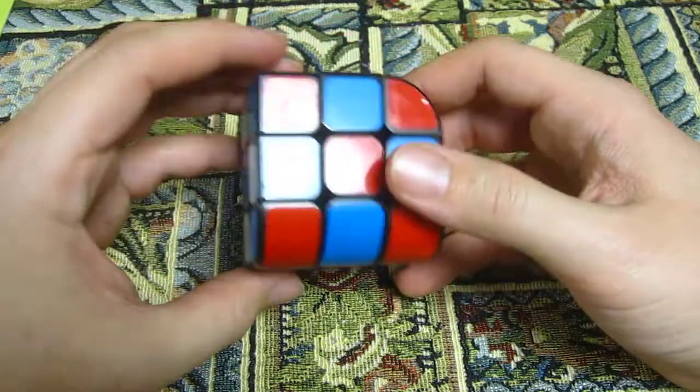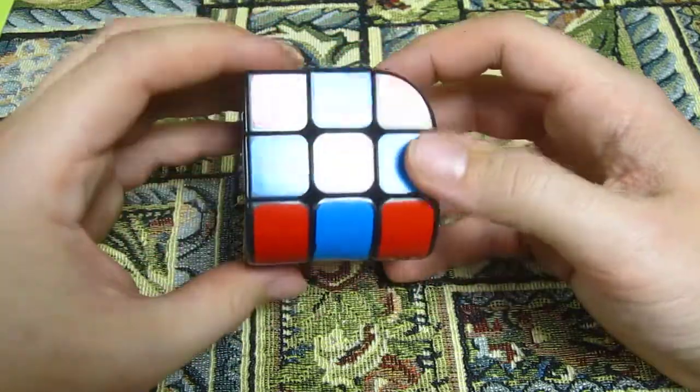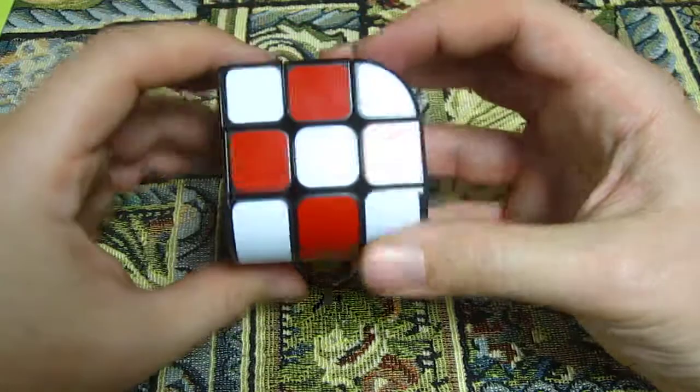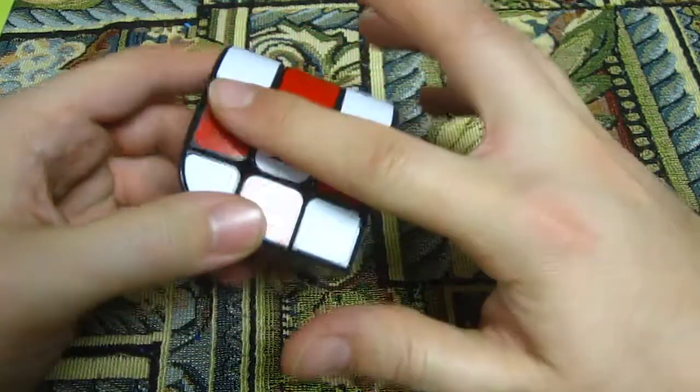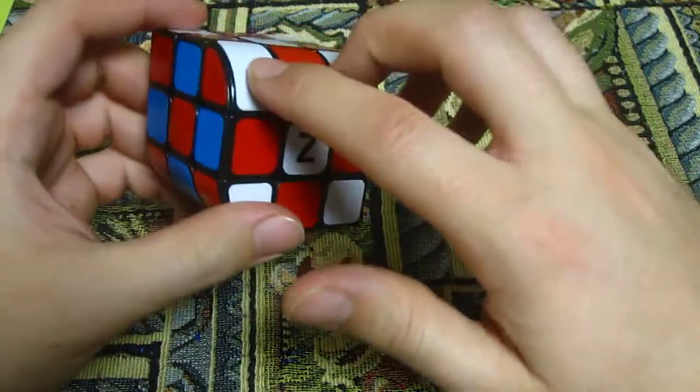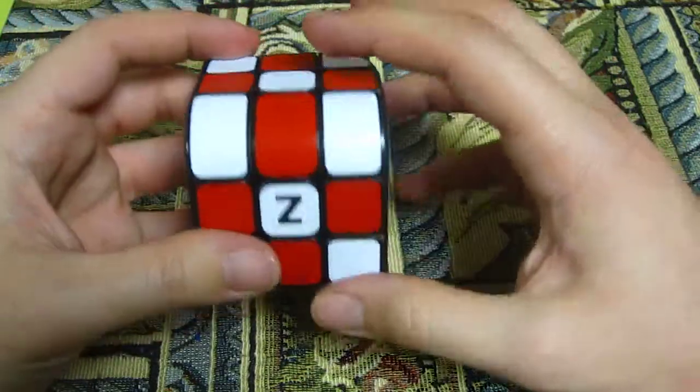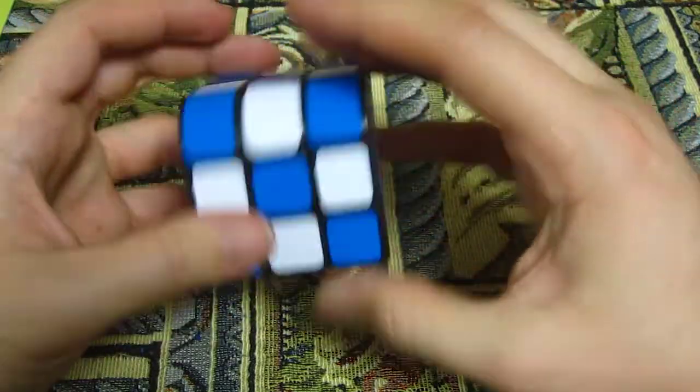So as you can see, each of the checkerboard colors has two of the same thing. And it's really cool because the face that is modified, or like the edge that's modified, connects the two colors—the two faces that look the same.